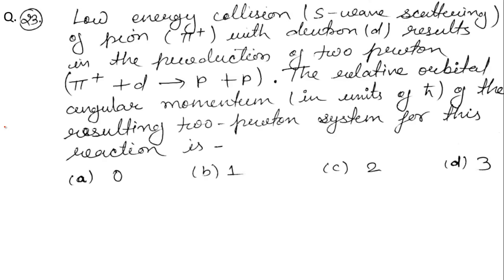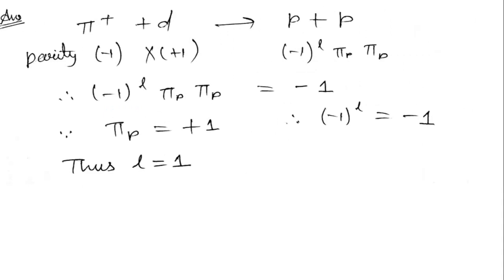Question 23: Low energy s-wave scattering of a pion with a deuteron results in production of 2 protons. The relative orbital angular momentum of the resulting 2-proton system is — we check orbital angular momentum through parity. The parity formula is (−1)^l. Parities are multiplicative. Pi meson parity is −1, deuteron parity is +1, and proton parity is −1. Comparing parities of both sides gives us the value of l for the two-proton system.